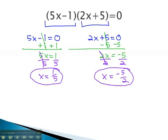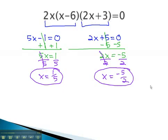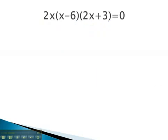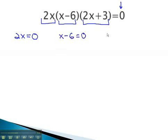Let's take a look at another example where we use this zero product property to find solutions. Here, we have three factors multiplied together: 2x is multiplied by x minus 6 is multiplied by 2x plus 3. One of those factors must be 0 for this equation to equal 0. So we set them each equal to 0: 2x equals 0, x minus 6 equals 0, and 2x plus 3 equals 0.